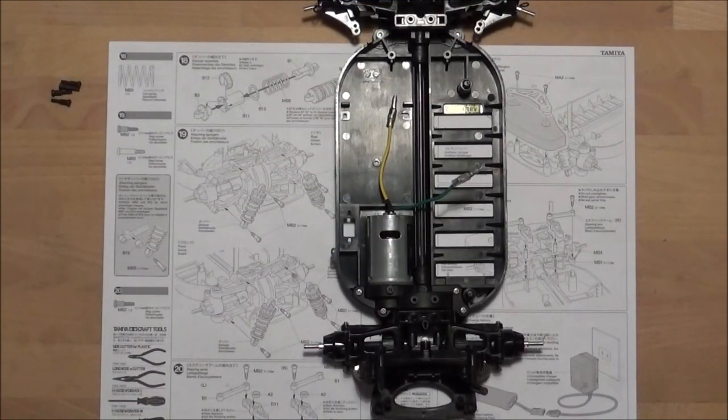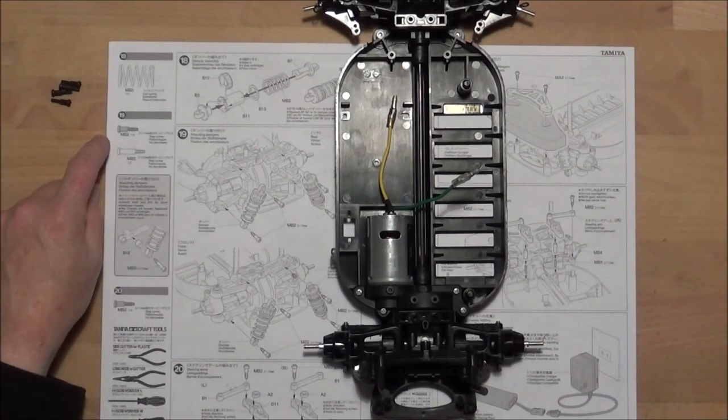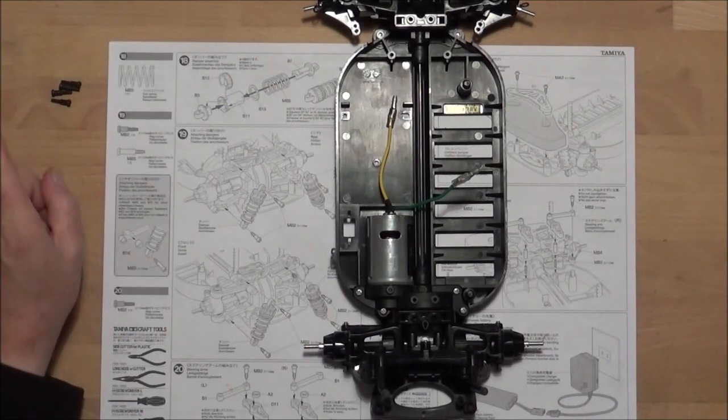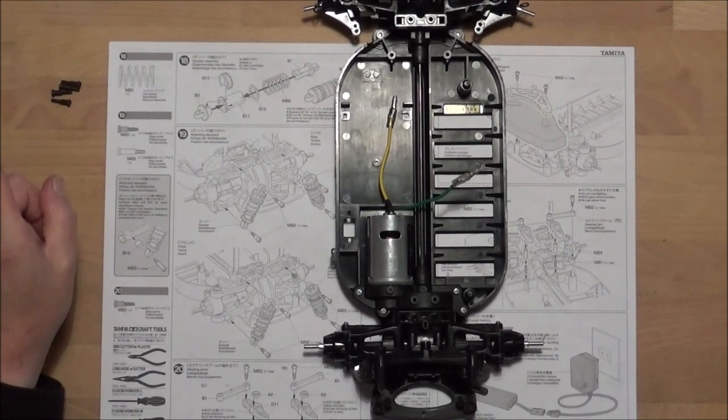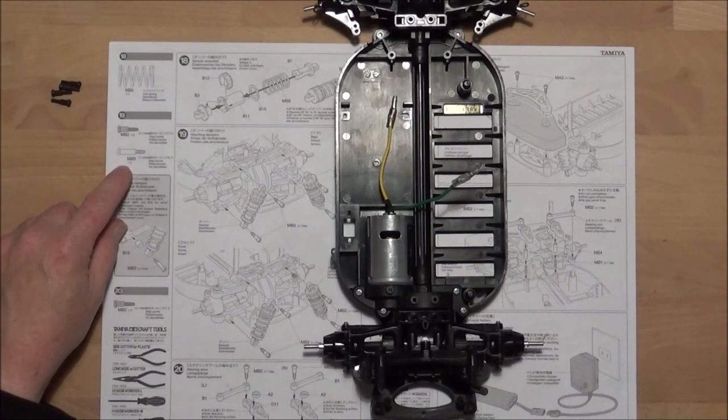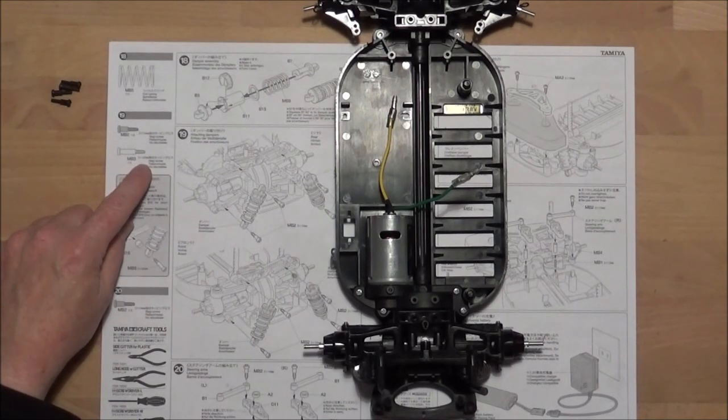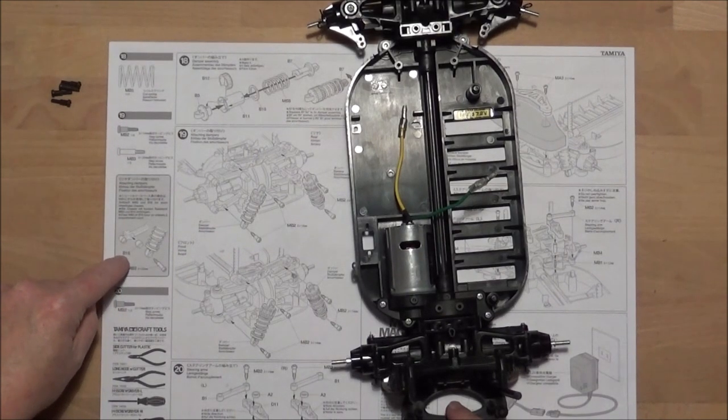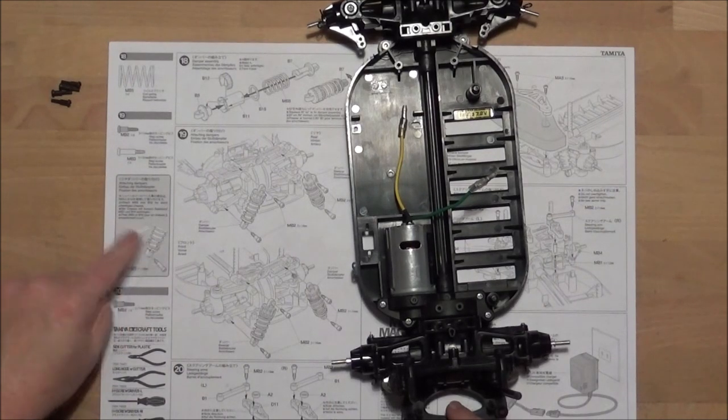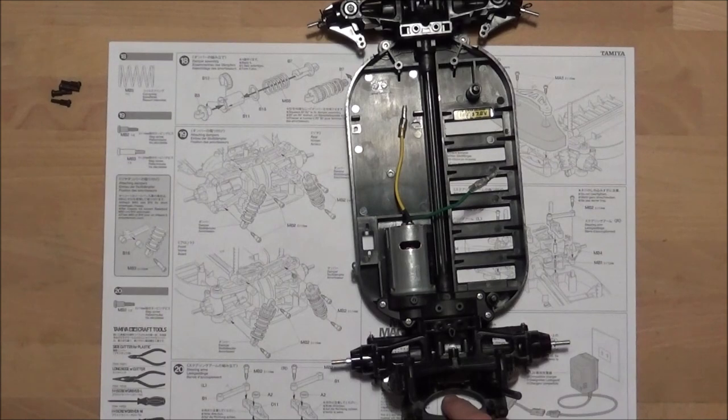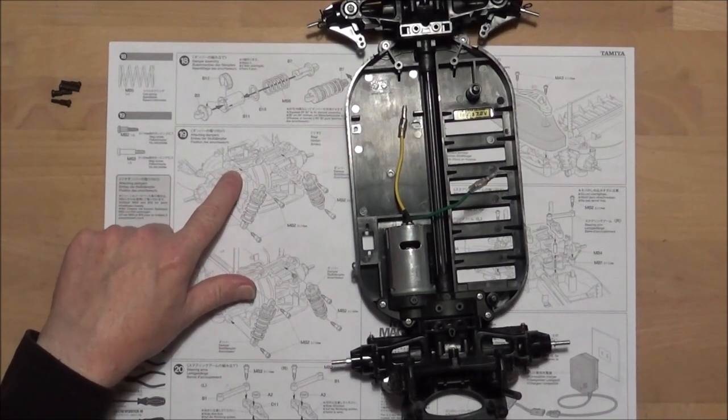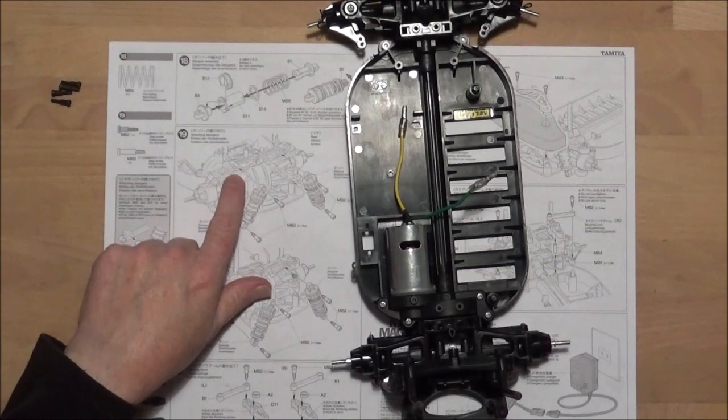Step 19 is installing the shocks onto the chassis itself. For this you're going to need eight MB2s 3x14mm step screws, or if you've got a short wheelbase body it tells you to use two MB3s which are 3x20mm step screws. If you use the short wheelbase body then you need part B16 as well as a spacer for the shock. It tells you to install the shocks on the inside mounting hole, as you see from the drawing there's two positions that it looks like you can mount these in.